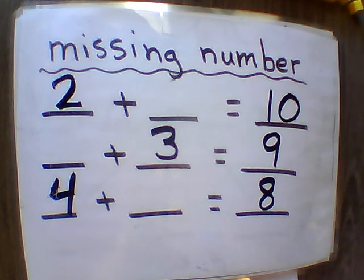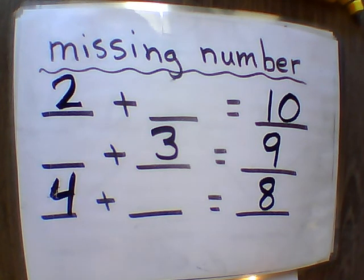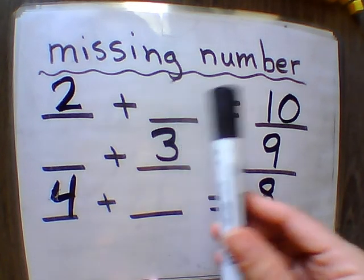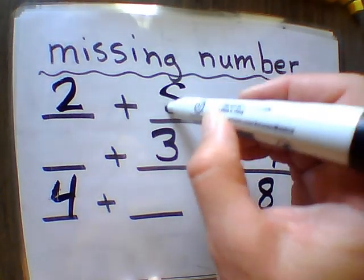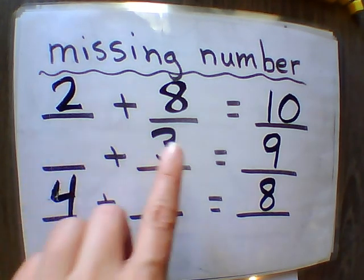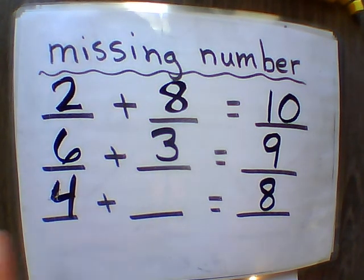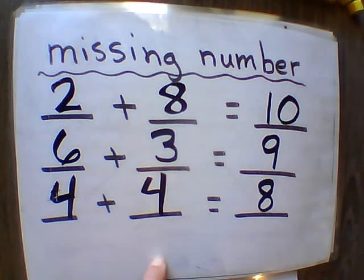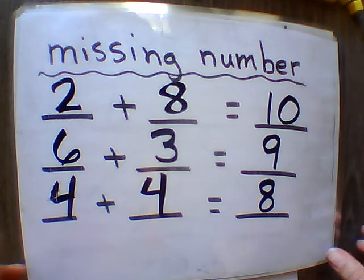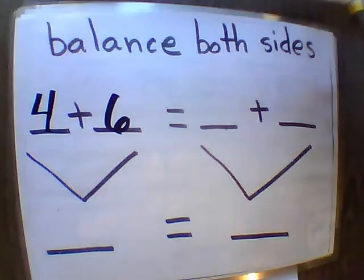Now we're going to find the missing number — pause the video and do that now. This is a review of number patterns. Two plus eight equals ten. Blank plus three equals nine — six plus three equals nine. Four plus blank equals eight — four plus four equals eight. And that is a double fact: a number added to itself.